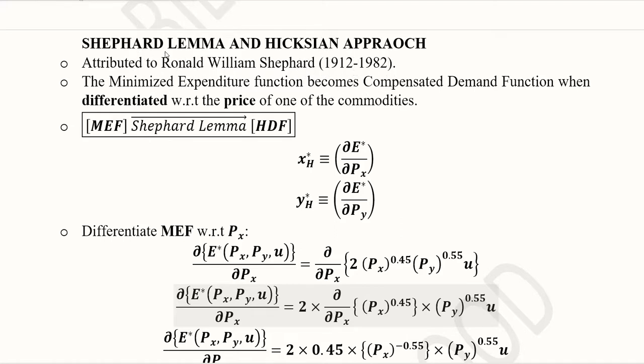He gave this idea in which we are able to use the minimized expenditure function in order to retrieve the Hicksian demand functions. It is slightly similar to Roy's identity where we used the indirect utility function to find out or retrieve the Marshallian demand functions.